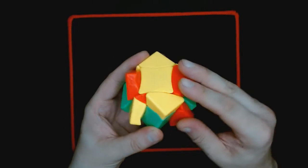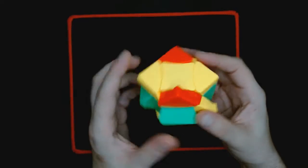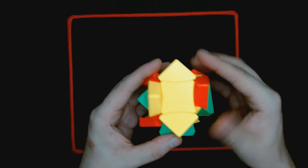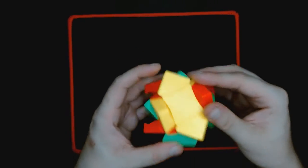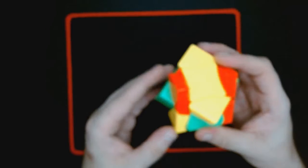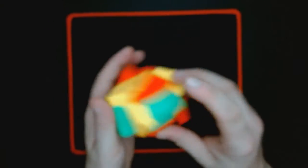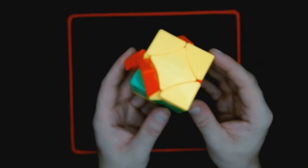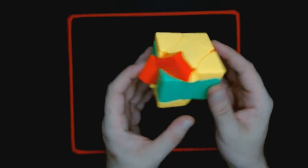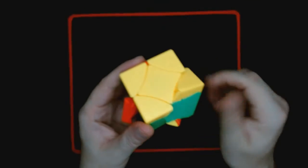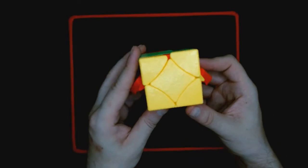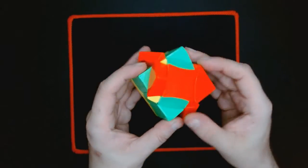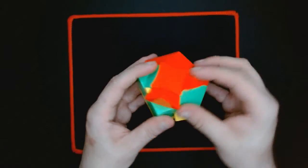Oh, it's all blurry, it's not focusing. There it goes. Well look at that, we got our cross. Now we do our F2L, which is very simple.